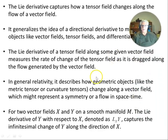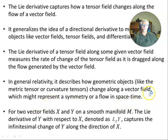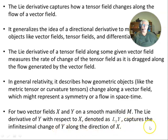In general relativity, it describes how geometric objects like the metric tensor or curvature tensors change along a vector field, which might represent a symmetry or a flow in space-time, such as Killing vectors. Now, for two vector fields X and Y on a smooth manifold M, the Lie derivative of Y with respect to X, denoted L subscript X of Y, captures the infinitesimal change of Y along the direction of X.